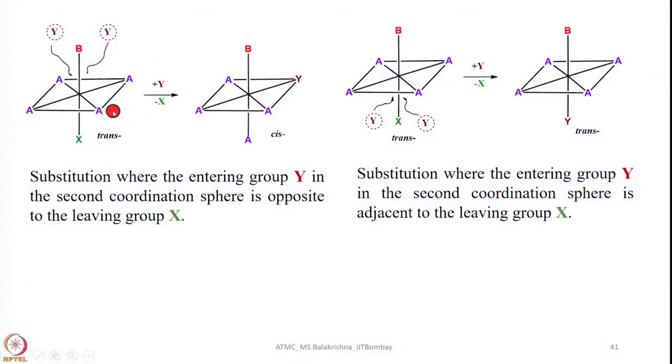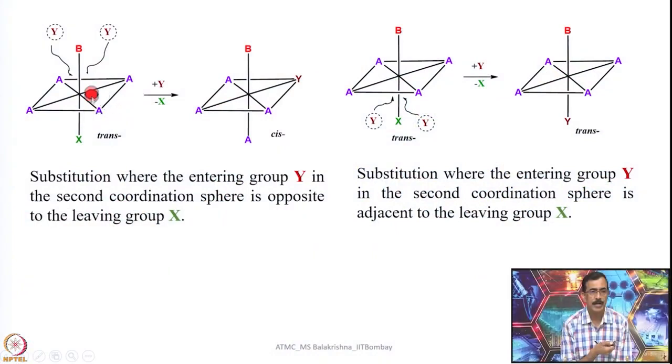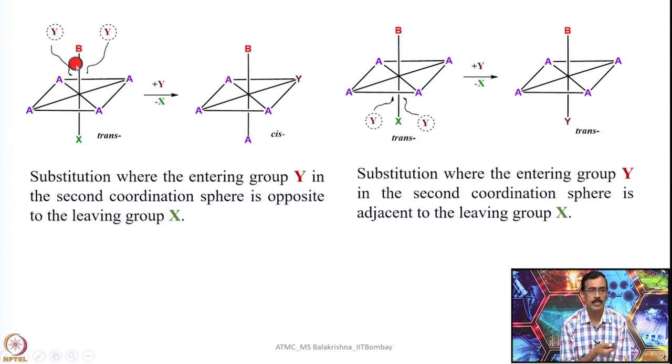Now let us continue from where I had stopped. I was discussing how important it is to see the entering ligand and the leaving ligand positions, and in what direction the entering ligand is situated in the second coordination sphere to come to the first coordination sphere during the substitution reaction. Let us consider two cases. Here I have considered a trans compound; in the plane we have 4 ligands A, and we have X — X is the leaving ligand. In all cases, X denotes the leaving ligand, and B will define the isomer conformation. This is a trans compound.